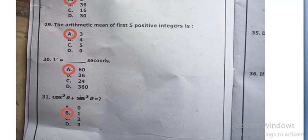Cos square theta plus sin square theta is equal to 1, option B.